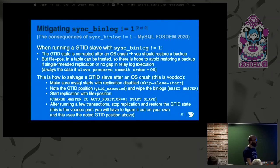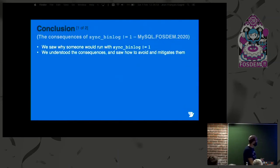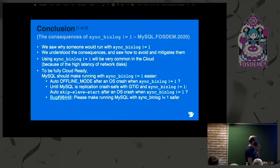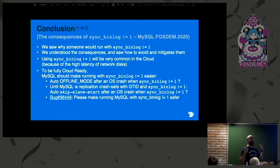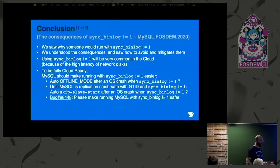That's how I run my slaves with Sync Binlog not equal to 1. In conclusion, we saw the consequences, understood them, and understood how to mitigate them. My educated guess is that more and more people will run with Sync Binlog not equal to 1 because of the cloud — syncing in the cloud is very slow. To run with decent TPS in the cloud, you need Sync Binlog not equal to 1. So to be fully cloud-ready, MySQL should make it easier for DBAs to run this way — specifically, auto offline mode after an OS crash and auto skip-slave-start after an OS crash.